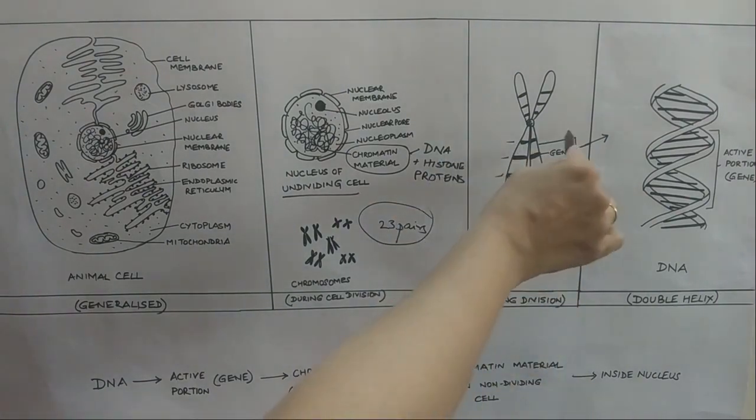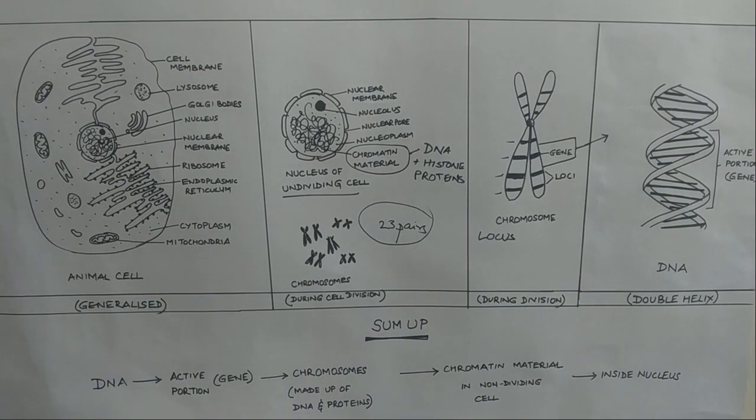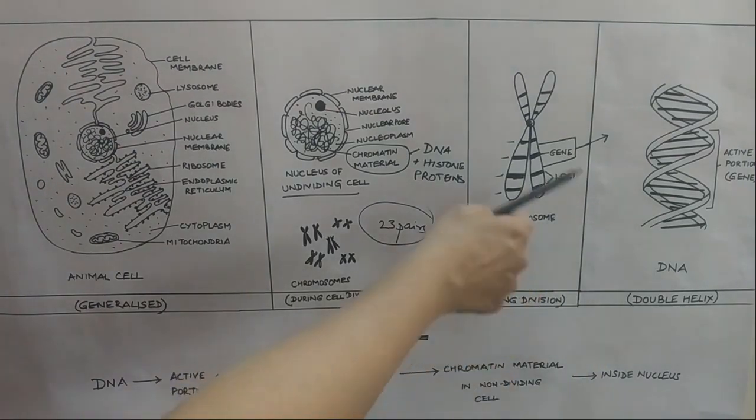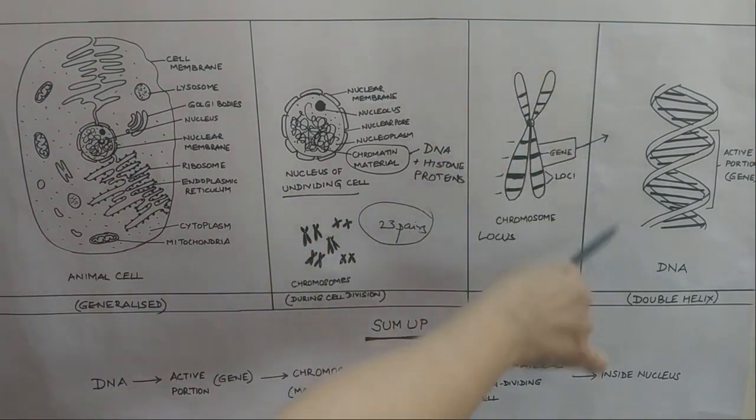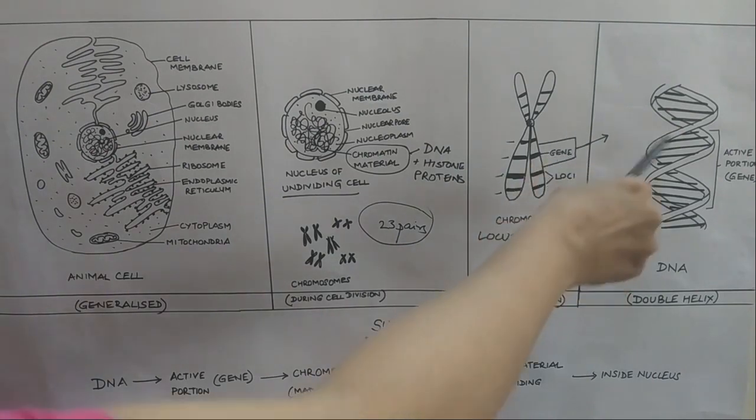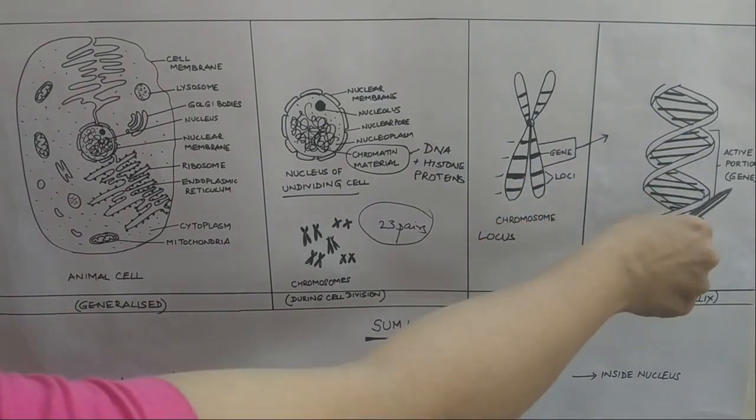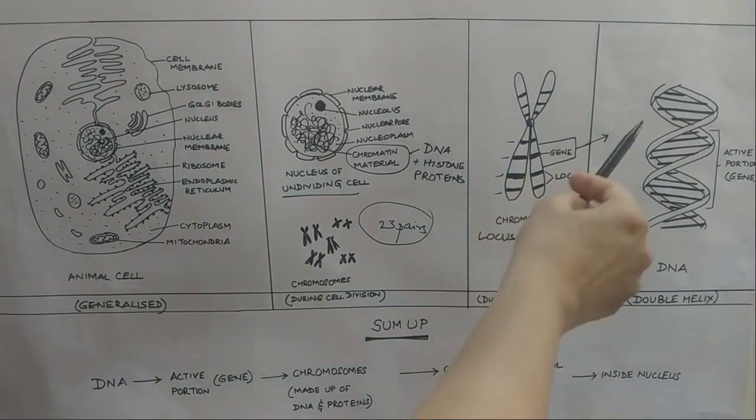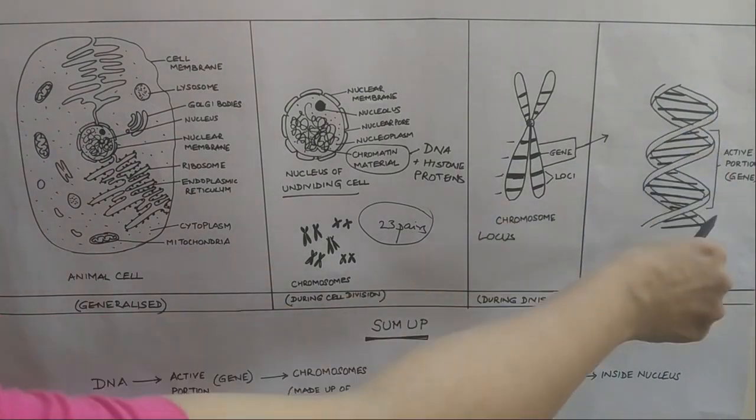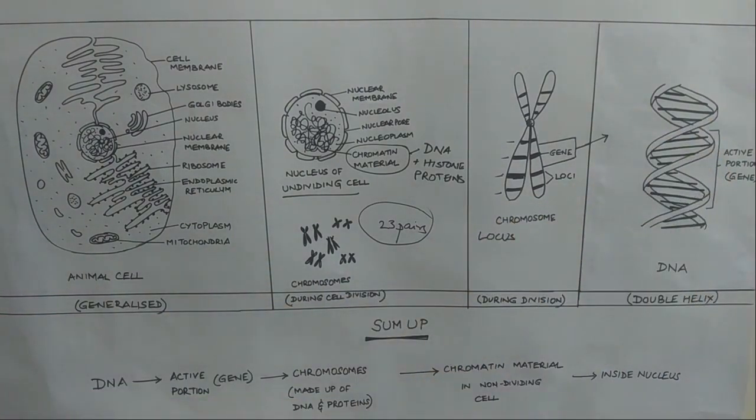Now, if you take one gene and then further expand it, you can see that the gene is basically made up of DNA. Chromosome is made up of both DNA and proteins. The gene is made up of DNA. An active portion of the DNA is what is called the gene. DNA is a double helix structure. We will take the structure of DNA as a separate topic completely in a separate video. But an active portion of the DNA is what is known as the gene.